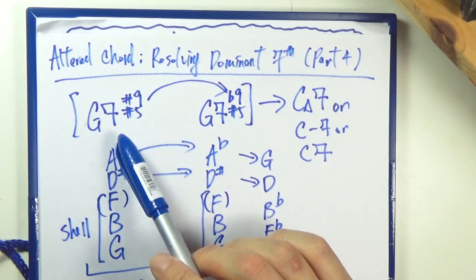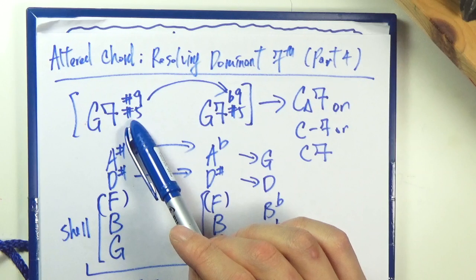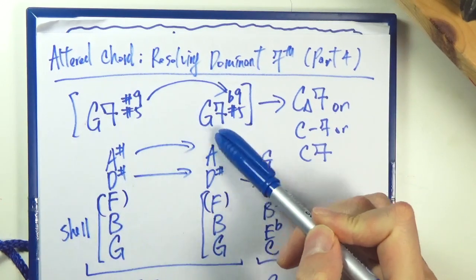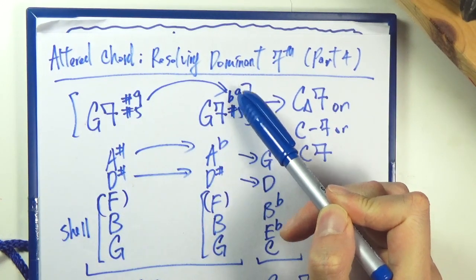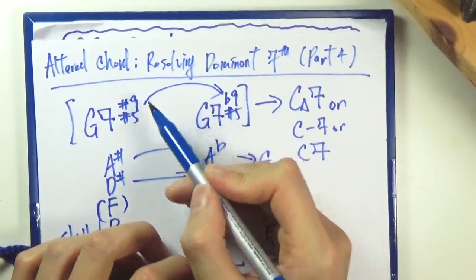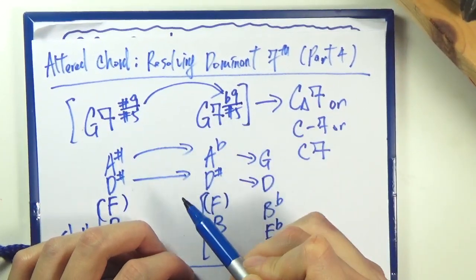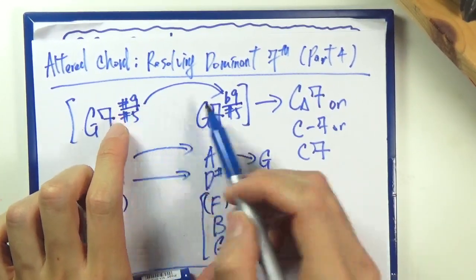You go from the G7 sharp 9 sharp 5 and you go to G7 sharp 5 first, but with a flat 9. So basically there's only one tension change - you go from sharp 9 flat 5, you keep the sharp 5 there.